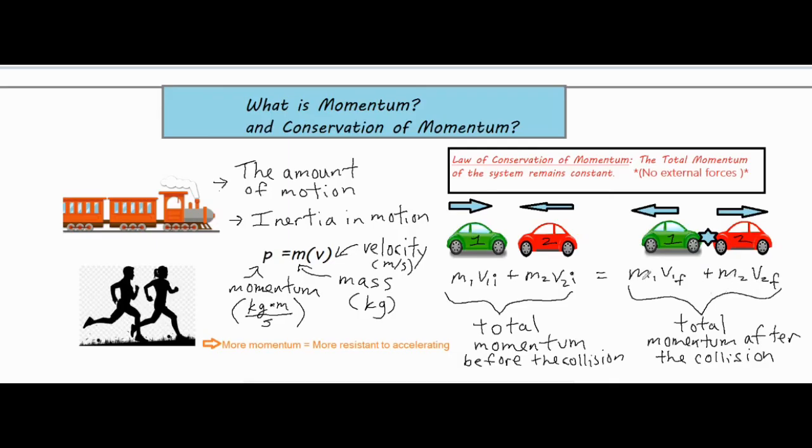The sum of those is the total momentum after the collision, which is equal to the momentum before. So you're able to set them equal to each other, plug in some values, and solve for some unknown variables if need be.